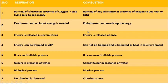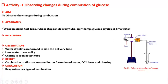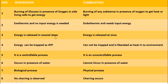In combustion, energy is released at once. When we heated glucose in the lab, the heat energy came at once because it is a single-step reaction — the reaction occurs in one step. But in case of respiration, it is a multi-step process, so energy is liberated in several steps: 2-ATP, 4-ATP, 8-ATP — energy comes in packets.